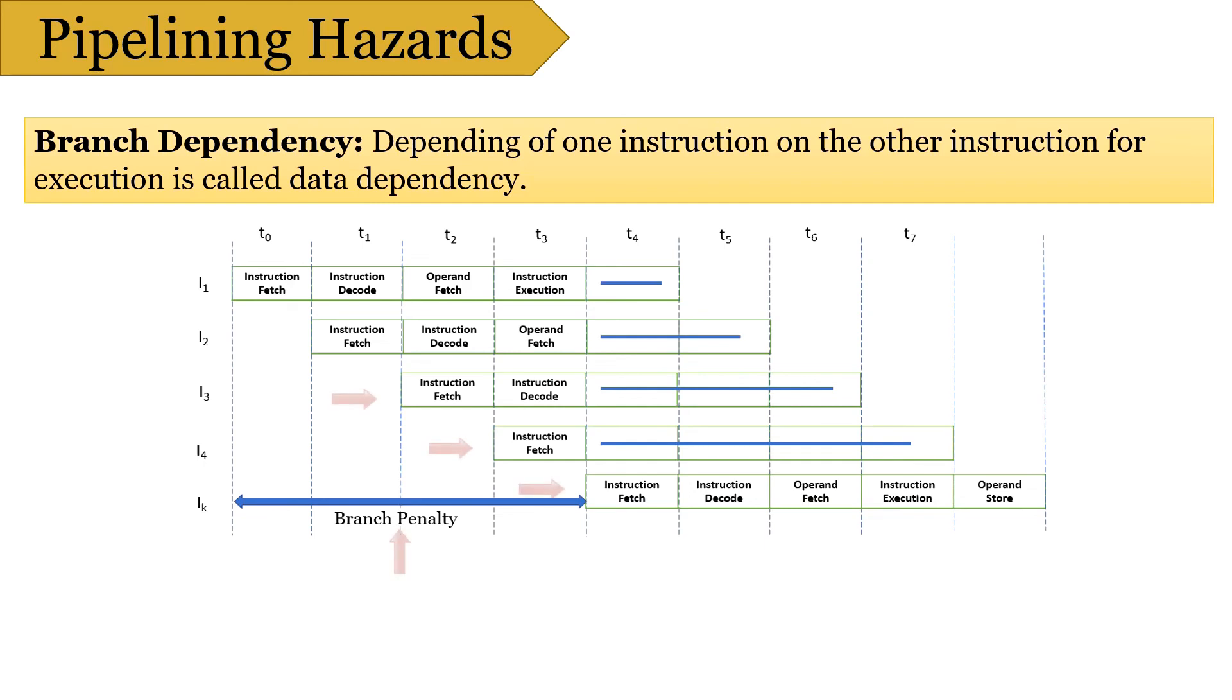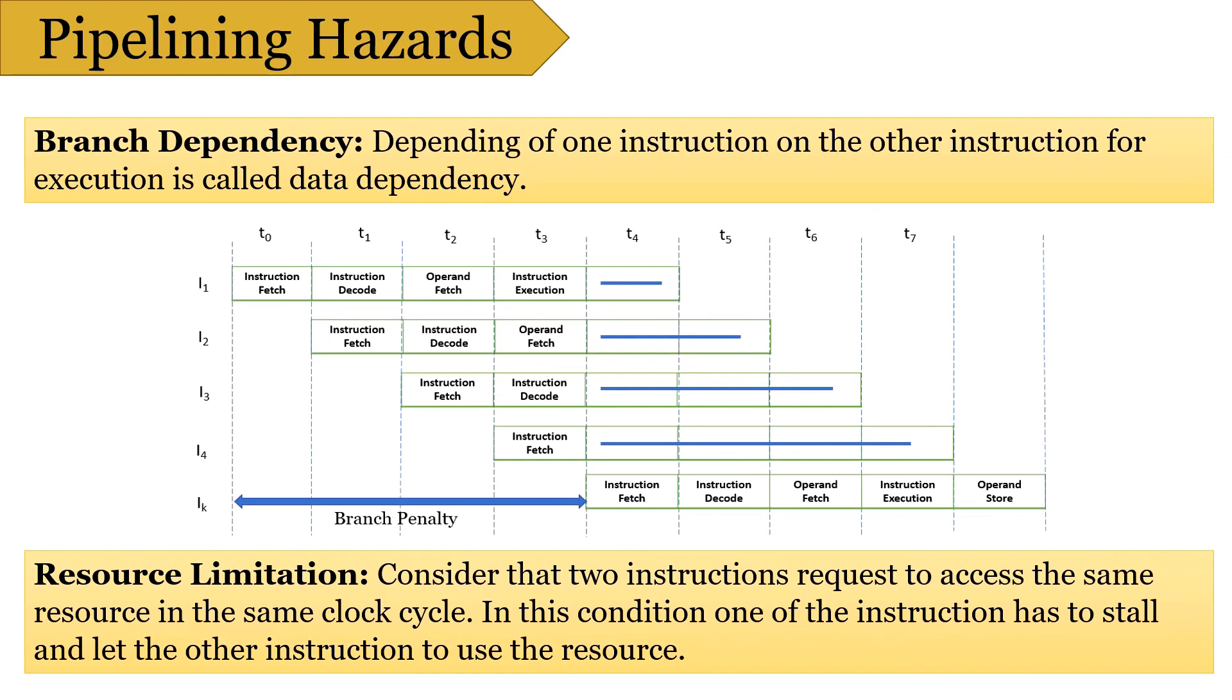So, this delay of 3 cycles is branch delay. Prefetching the target branch address will reduce the branch delay. Like if target branch address is identified at decode stage, then branch delay will reduce to 1 clock cycle. The last hazard is resource limitation. If two instructions request for accessing same resources in same clock cycle, then one of the instruction has to stall, and let other instruction to use the resource. This stalling is due to resource limitation. However, it can be prevented by adding more hardware.